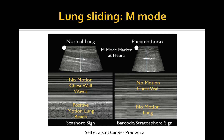This is a direct comparison of normal lung with the seashore sign on M-mode versus pneumothorax with a barcode sign on the image to the right.